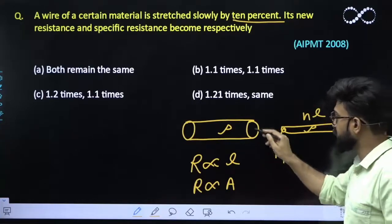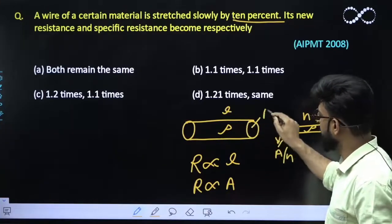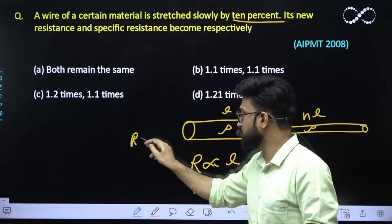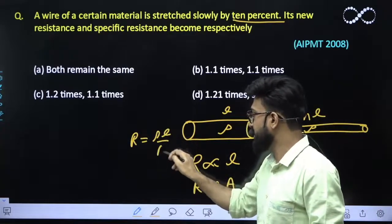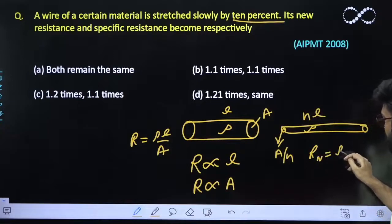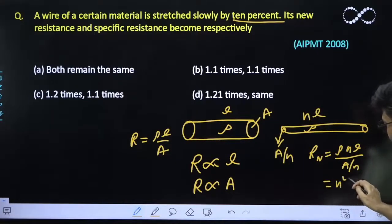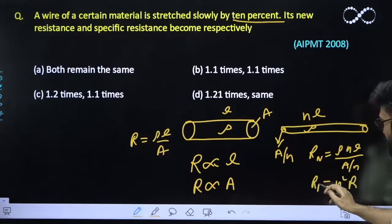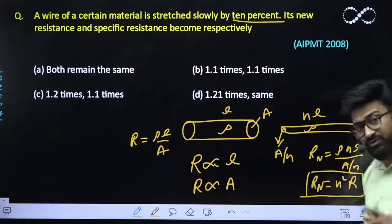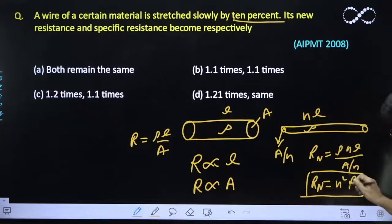In this situation also, if its length is L and its area is A, so this R is ρL by A. So the new resistance here it would be equivalent to ρ NL by A by N which is N square times of previous value. So that means we know that if length increases by certain proportion then the new resistance would also be increased.